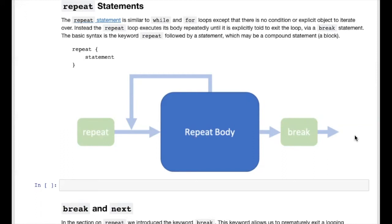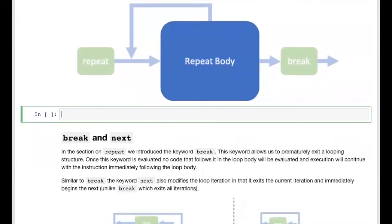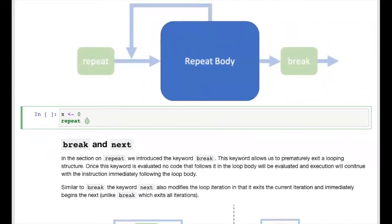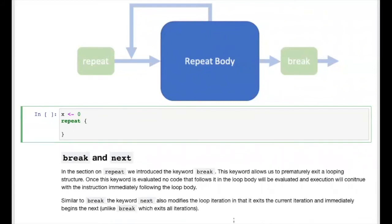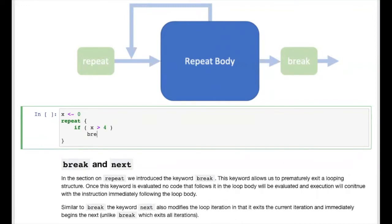Typically the break keyword is used in conjunction with an if statement, and because of this we can actually replicate the way a while loop works using repeat. To output integers 0 through 4 with a repeat loop, we start by initializing x to zero, then write repeat and open the compound statement. To mimic a while loop, we evaluate a condition first: if x is greater than 4, we break, exiting the loop the moment x exceeds 4.